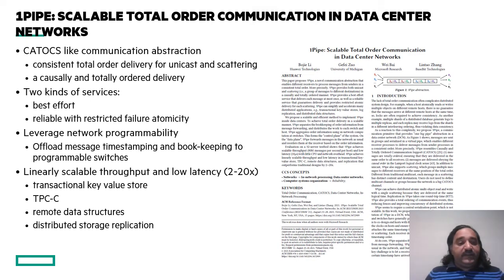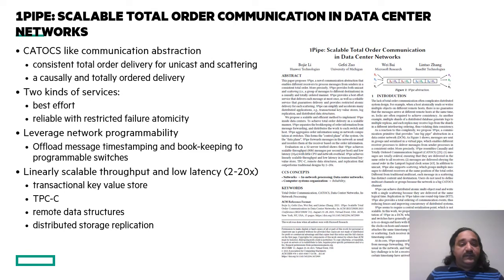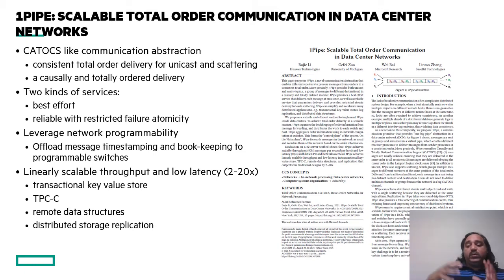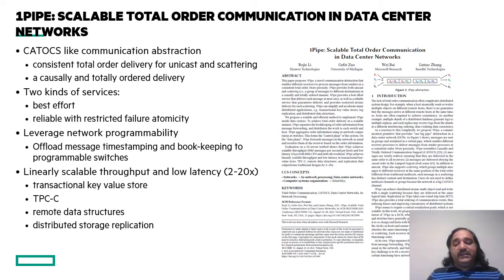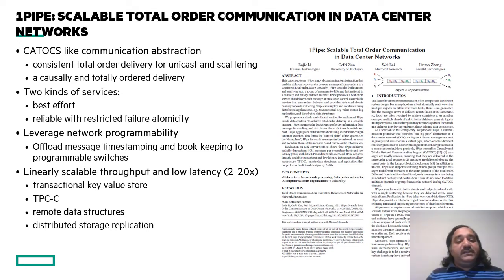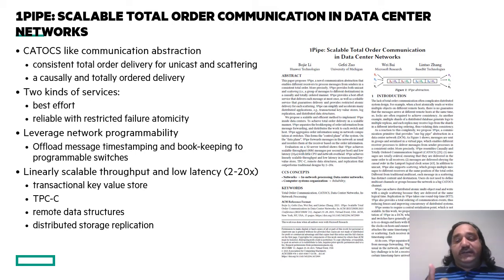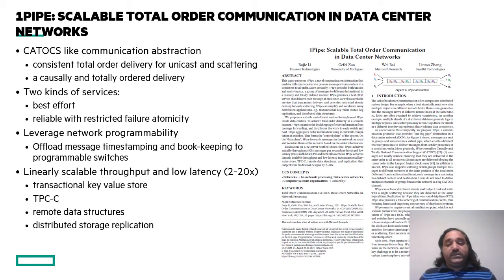One Pipe achieves this communication abstraction by leveraging network programmability — offloading message timestamping and bookkeeping to programmable switches, which are increasingly being adopted. Their implementation and evaluation show that One Pipe is linearly scalable both in throughput and latency across four application types: a transactional key-value store, the TPC-C benchmark, remote data structures, and distributed storage replication.